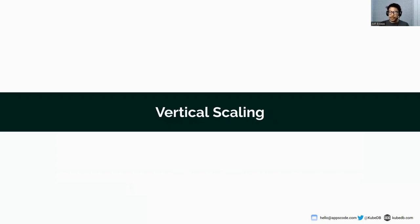Next, we will talk about vertical scaling. In vertical scaling, you can upscale the CPU, memory, or other computing resources using the vertical scaling ops request. If you have a Percona XtraDB cluster of three nodes, you can upscale or downscale the CPU and memory using the vertical scaling ops request.